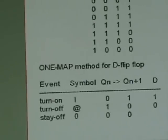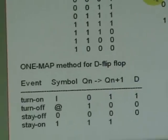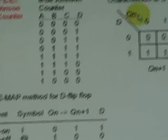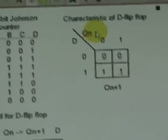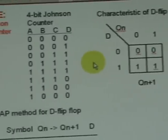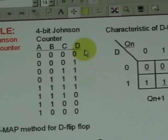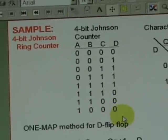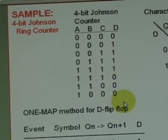This next state Karnaugh map has an input D and present state Qn. Next, we'd like to use this truth table of the 4-bit Johnson counter.